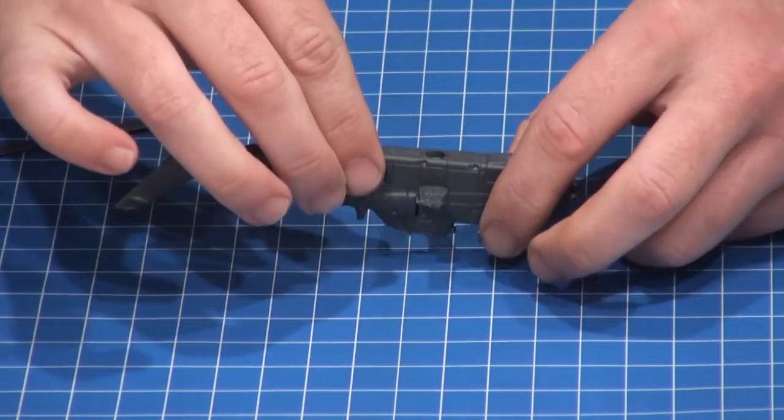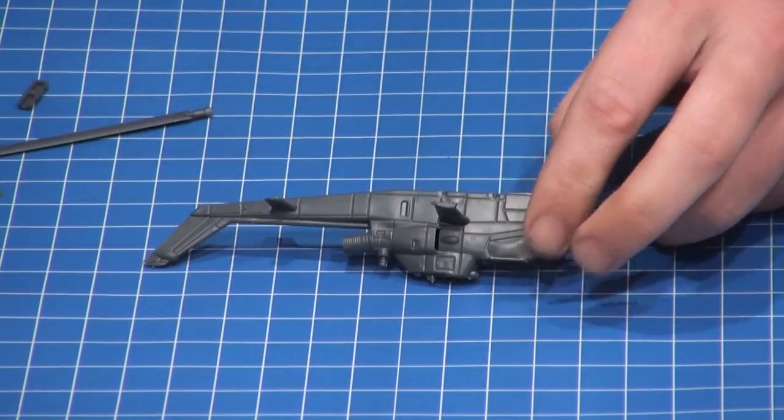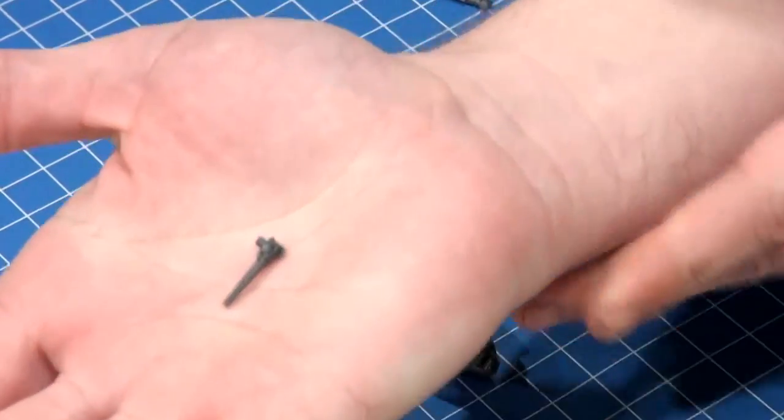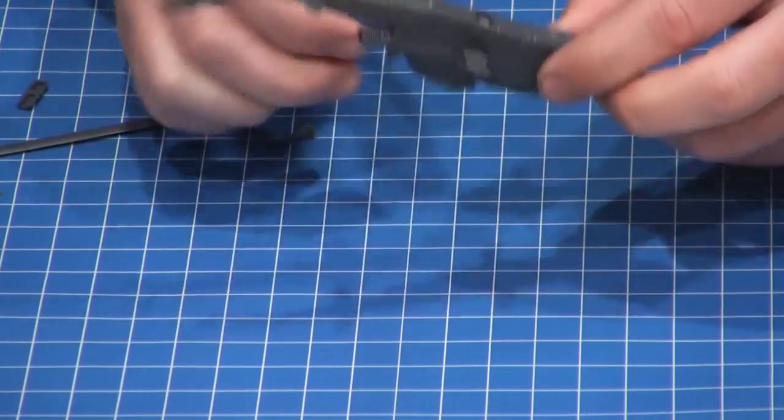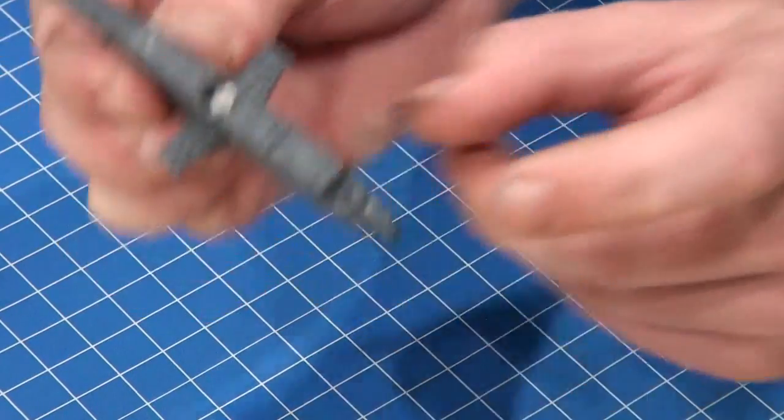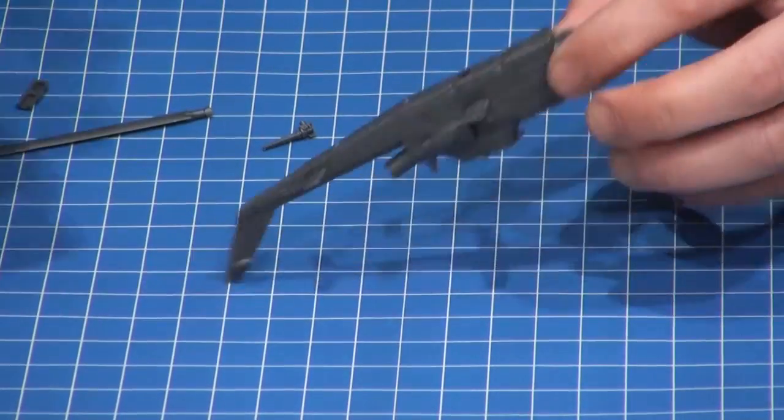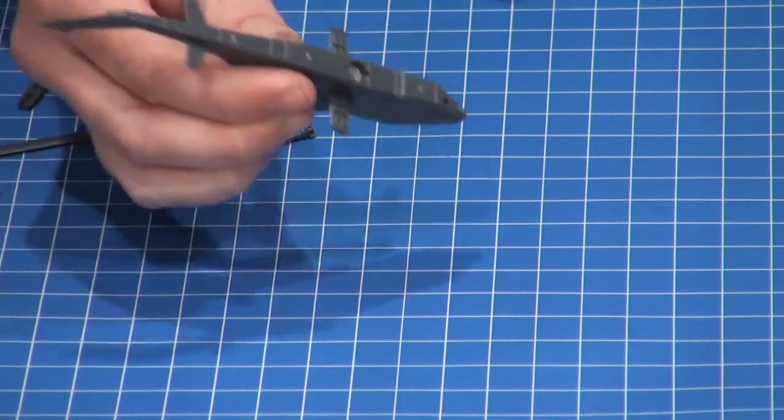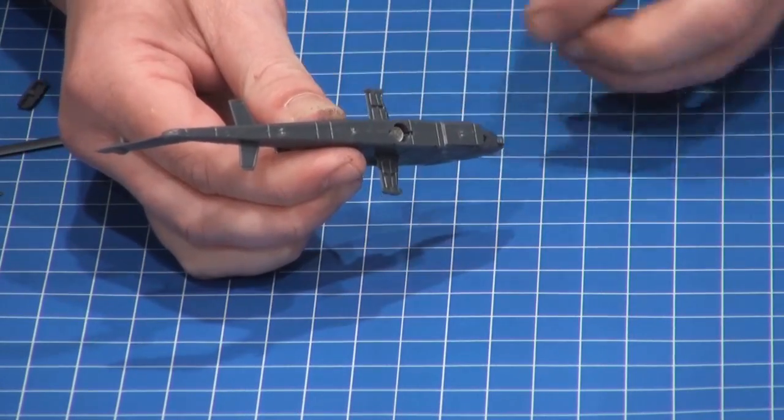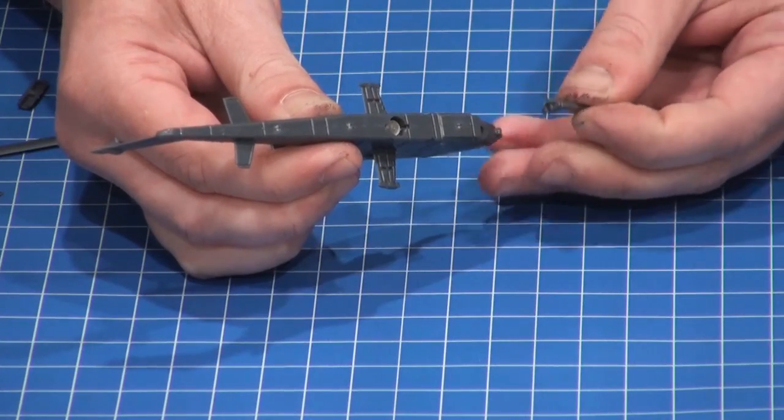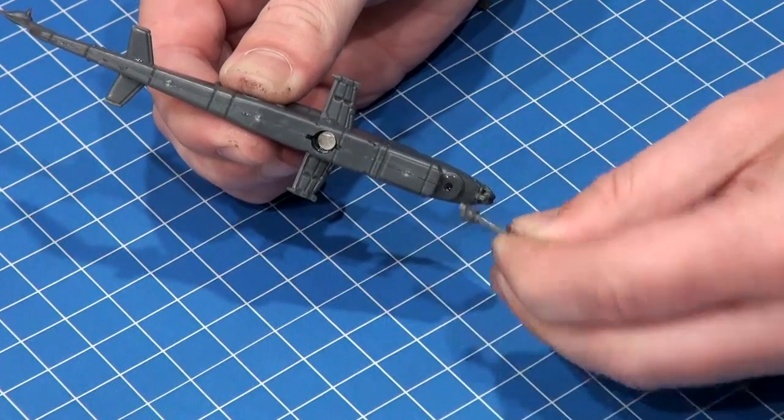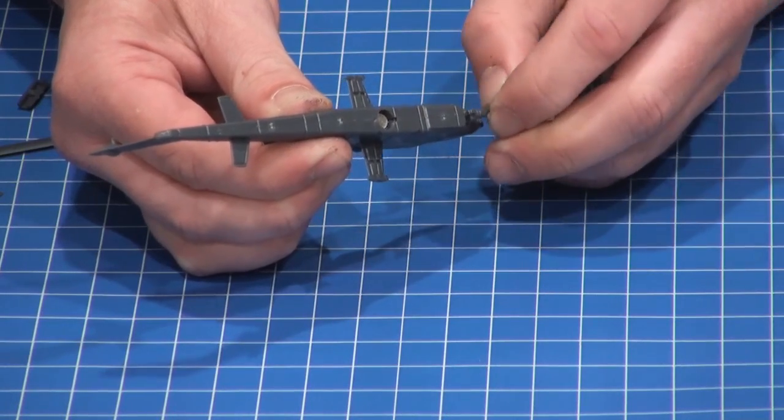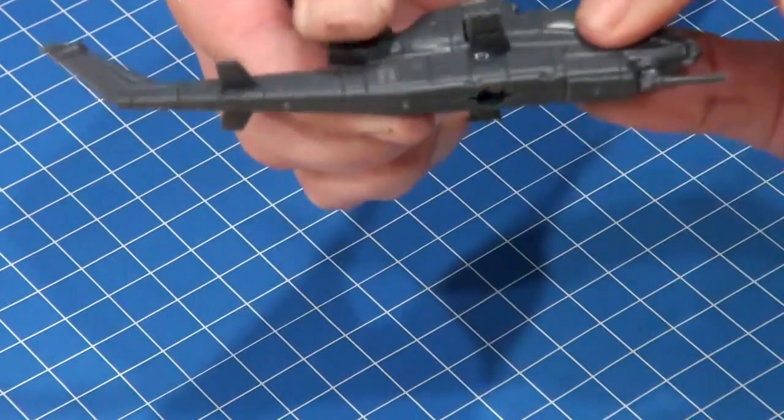So the next item that I attach to the model itself is going to be the 3 barrel 20mm cannon which is this item here. And that fits into this area. So again just a small dab of glue. And this gun is on a mount that allows it to aim to the left and right as well as up and down in orientation. But I always seem to glue them straight forward.